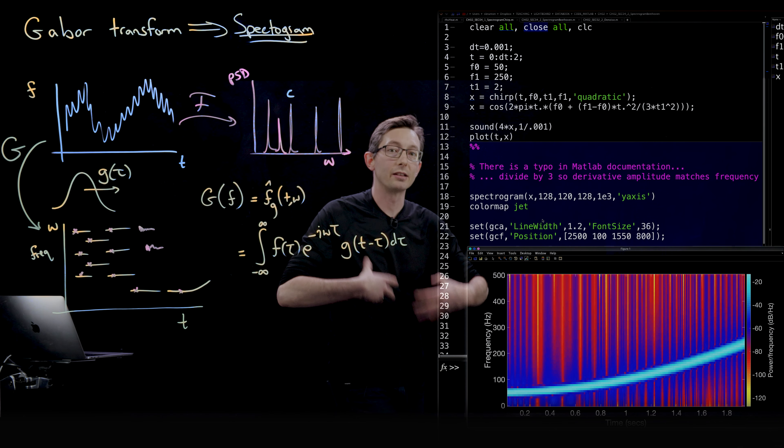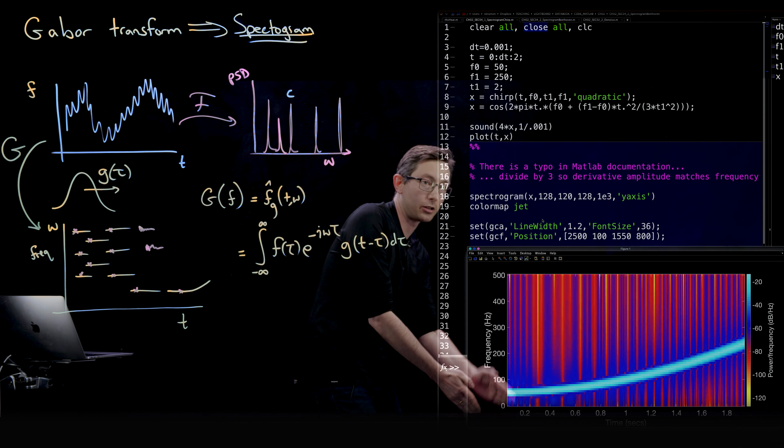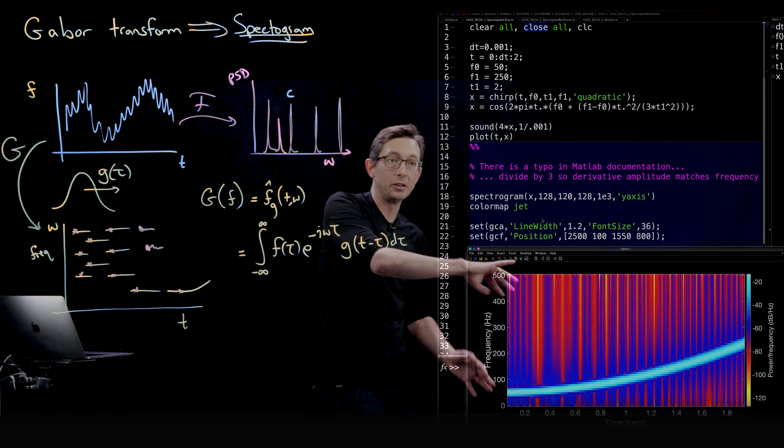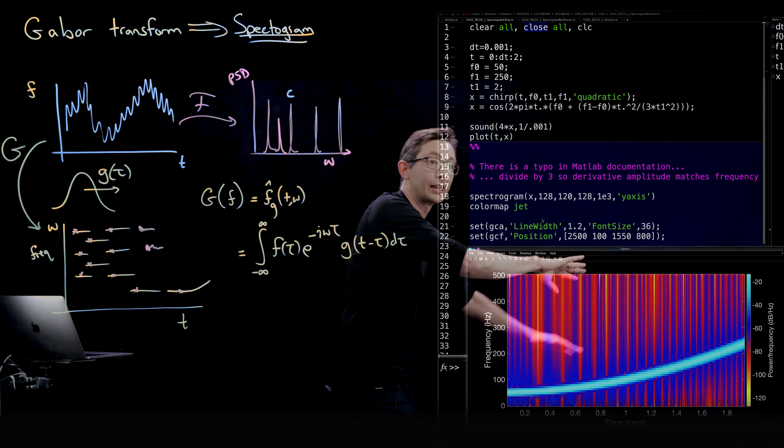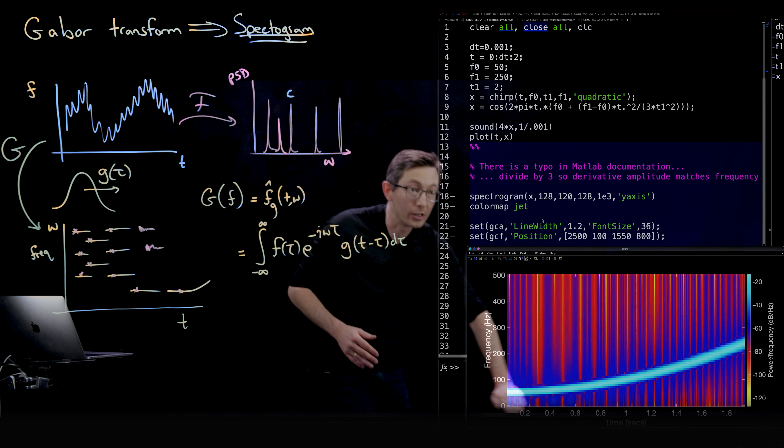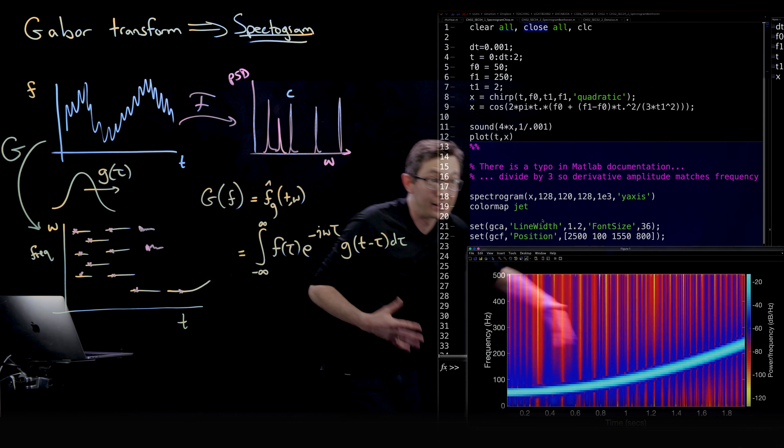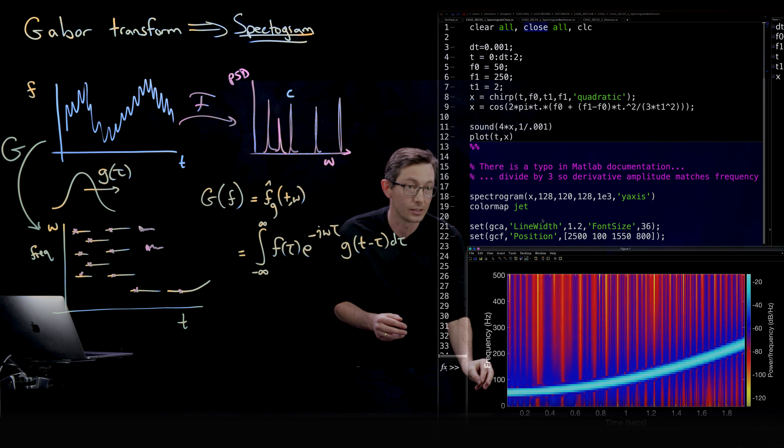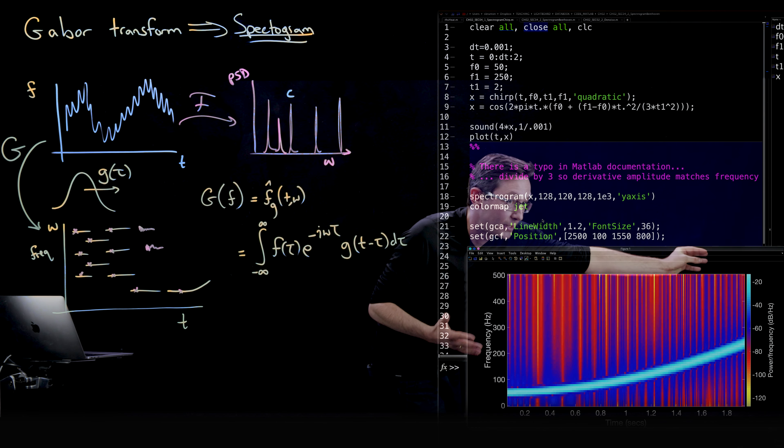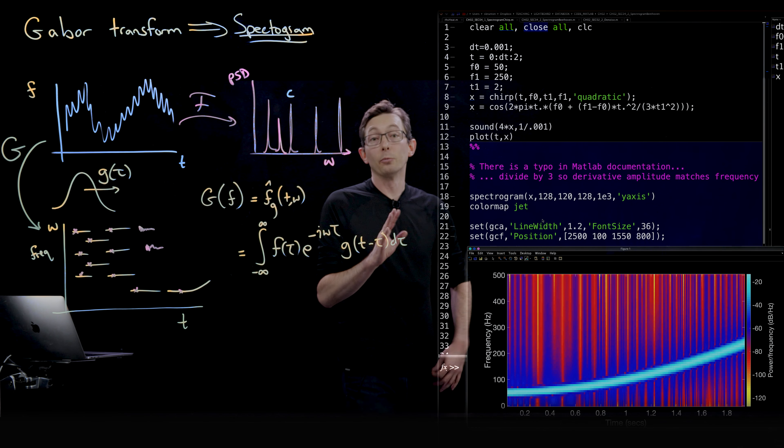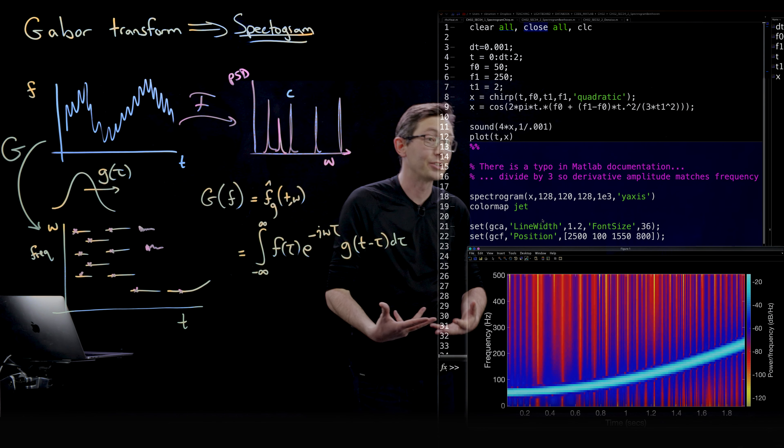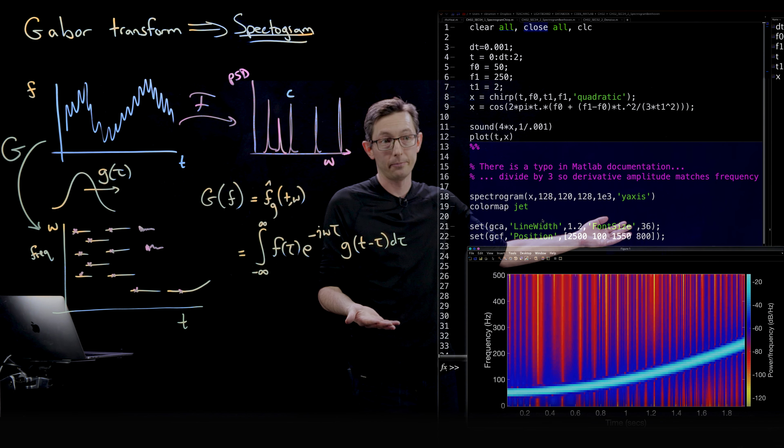This is the spectrogram here. Bright blue means that there's more power. The vertical axis here is basically the power spectrum at an instant in time. You can see this power spectrum evolving in time as we go from low frequency to high frequency as time evolves from 0 to 2 seconds. This goes from low frequency up to high frequency. Really useful. It doesn't tell you just what frequencies are there, but it tells you at what point in time those frequencies are there.